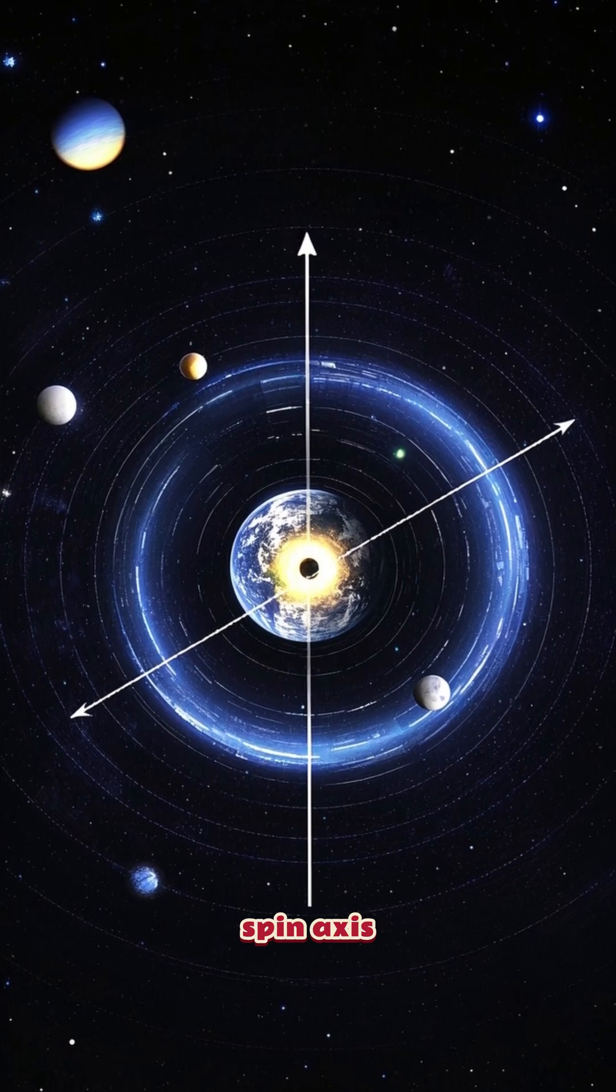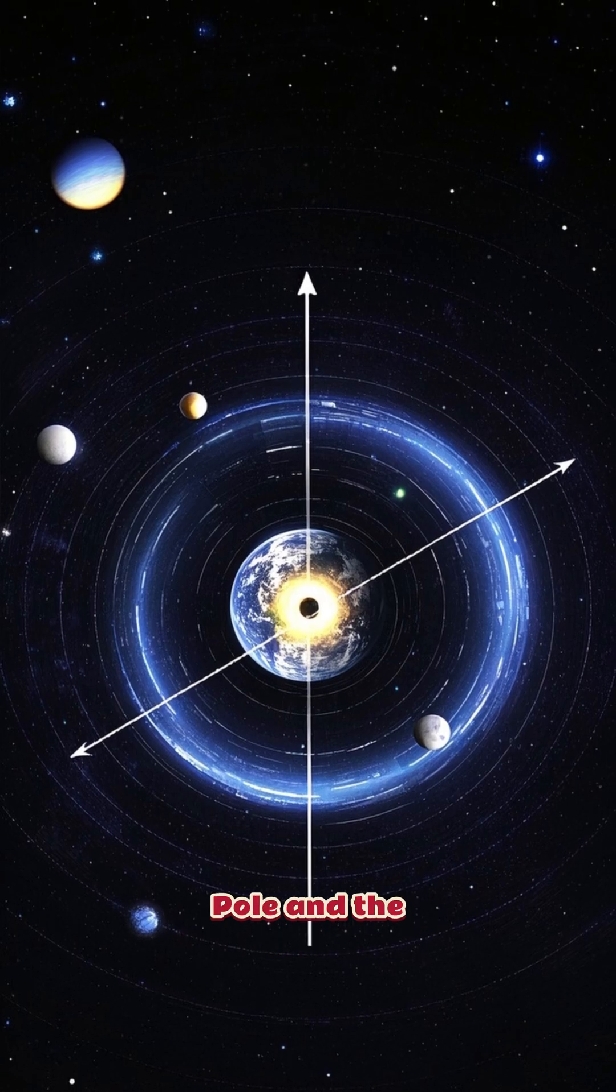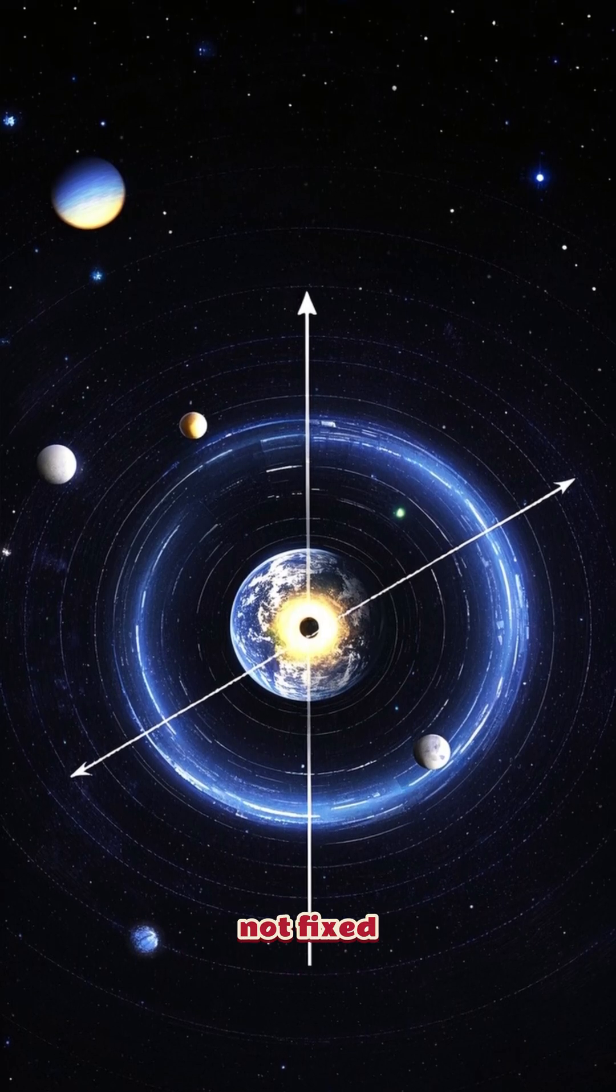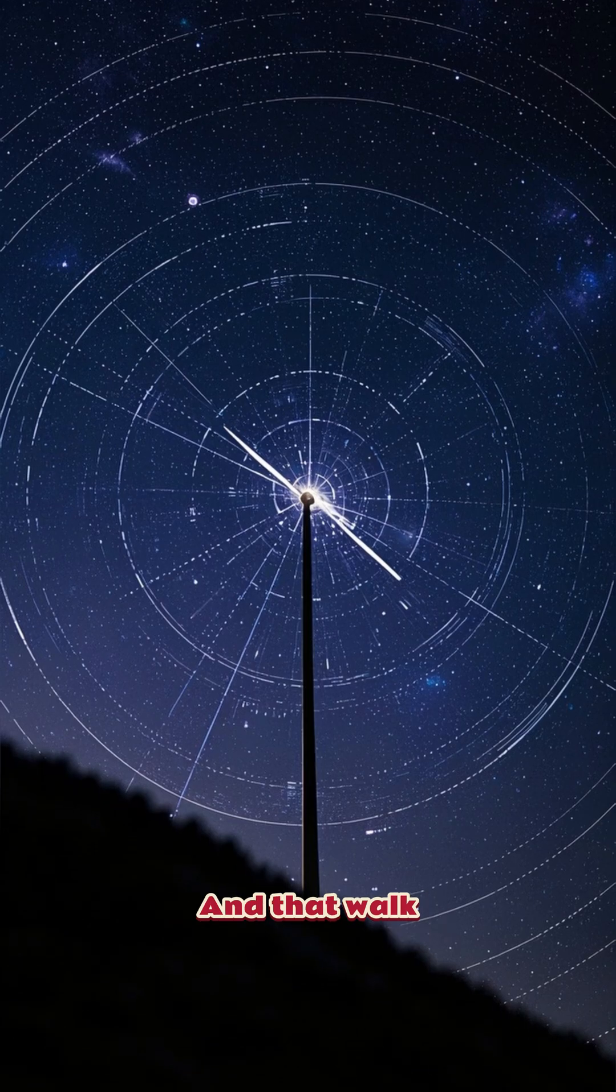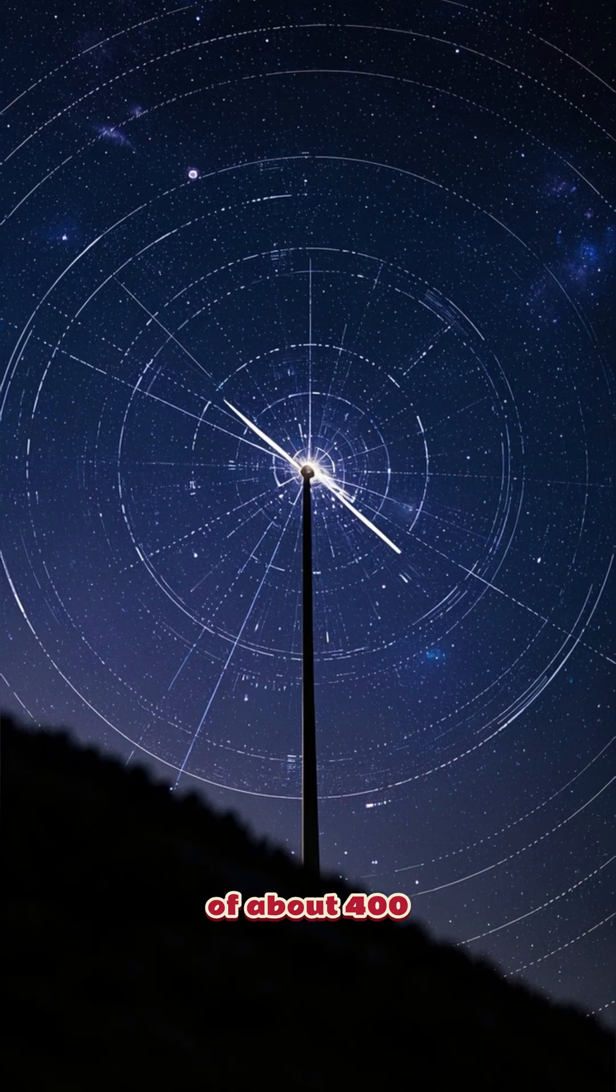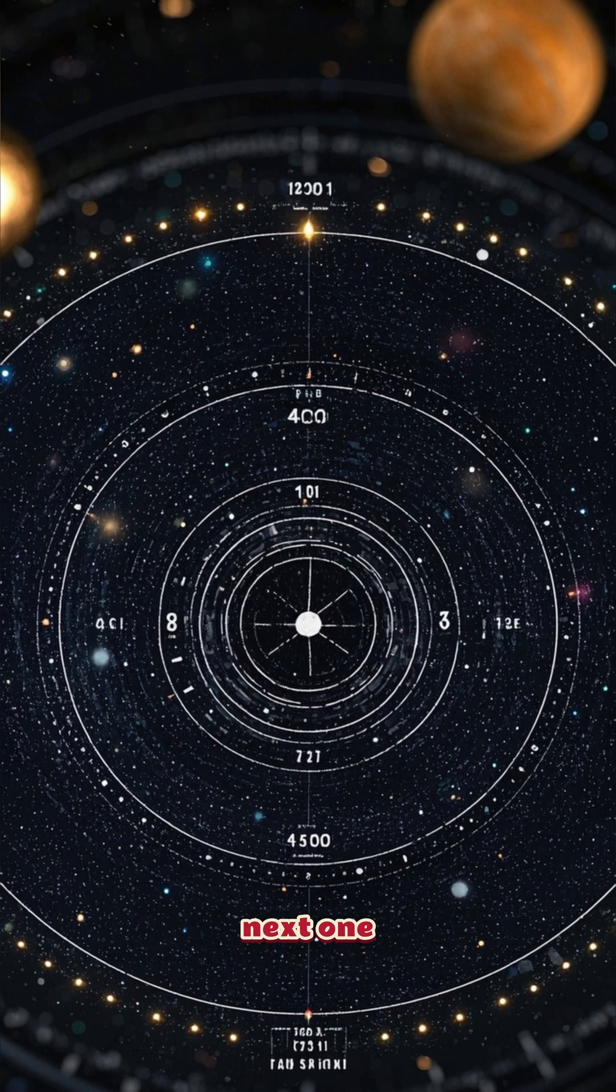This is Earth's spin axis. It's the line that goes through the North Pole and the South Pole, and it's not fixed. In fact, it wobbles like a drunkard's walk. And that walk has a period of about 400 years. And we're currently at the end of one cycle and approaching the next one.